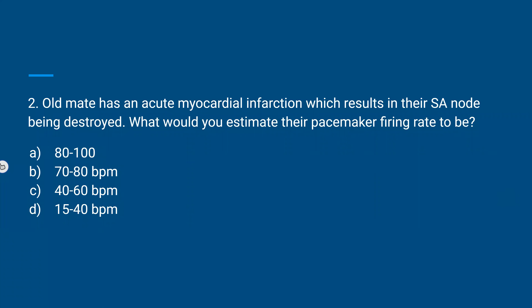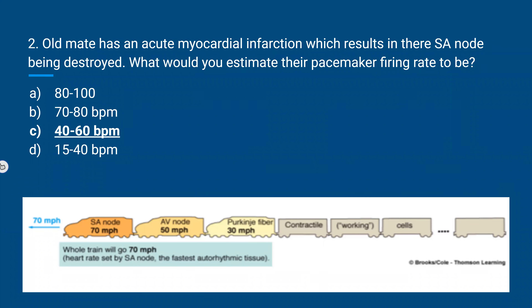Clinical question: Old Bay has an acute myocardial infarction resulting in SA node destruction. What would you estimate their pacemaker firing rate to be? When you knock out the SA node — normally firing at 70–80 beats per minute — the AV node takes over, like cutting the first carriage off a train, leaving the remaining carriage to handle the load at about 40–60 beats per minute.